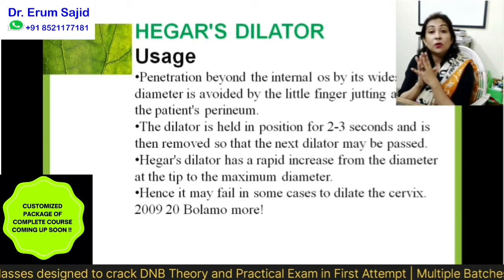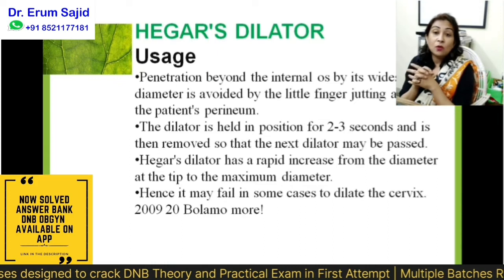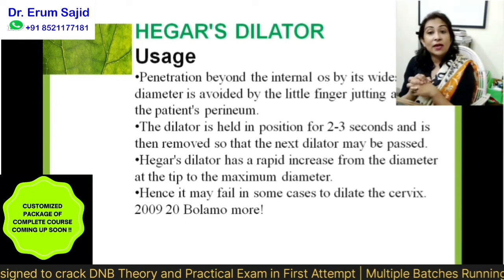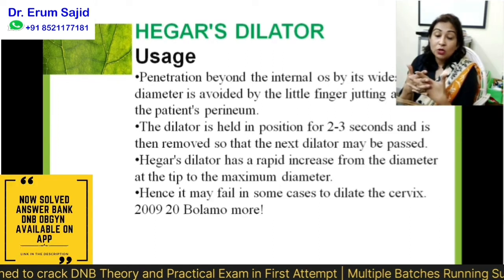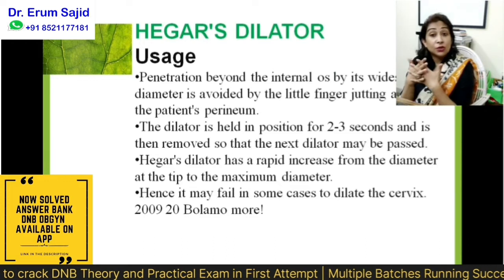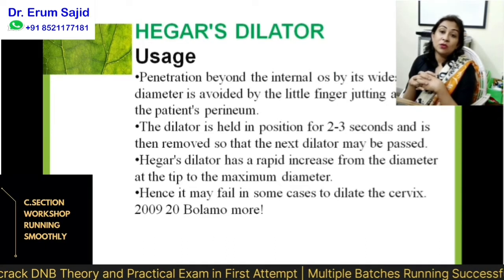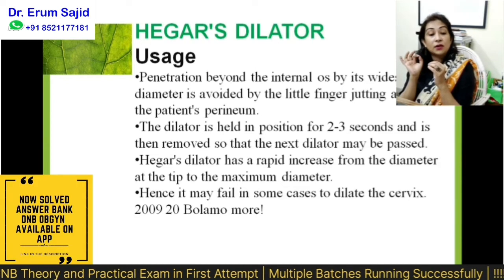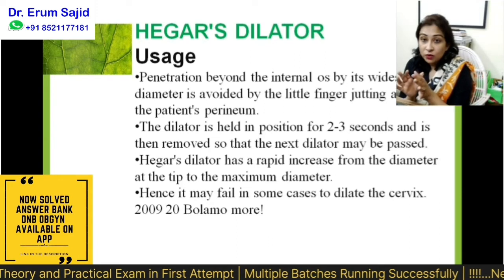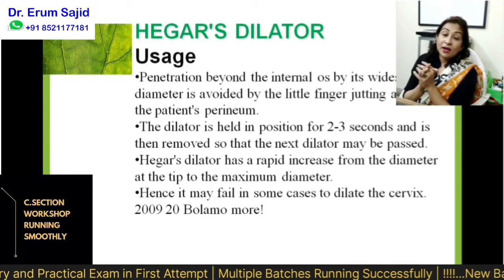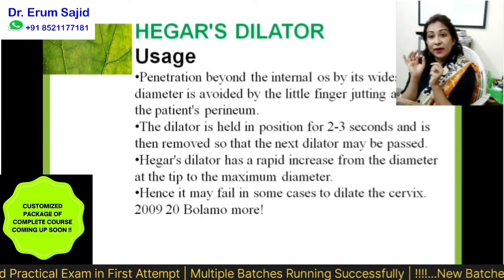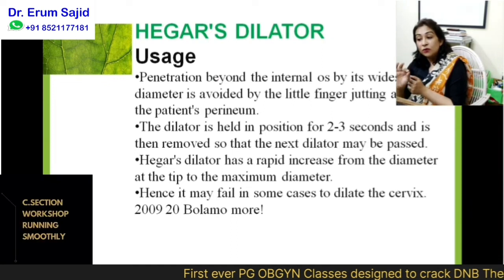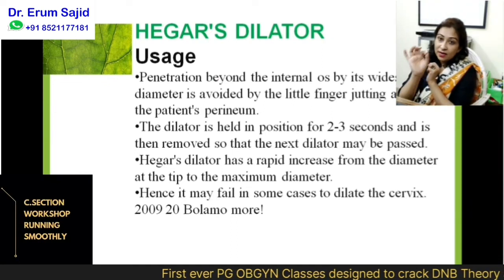You have to be very careful when using a dilator, because most commonly you will need it for abortion procedures — dilatation and evacuation or dilatation and curettage — or for retained products, where the patient will have a very soft uterus. If you accidentally go in at the wrong angle, you can penetrate and cause rupture of the uterus. The dilator is held in position for 2-3 seconds and then removed so the next dilator may be passed.